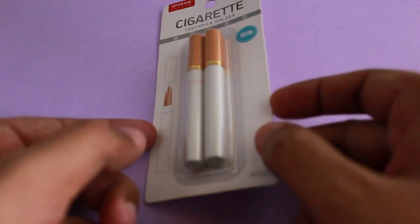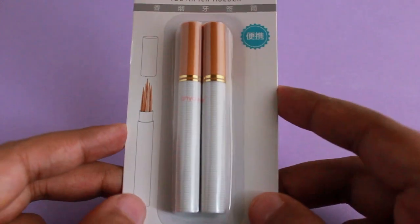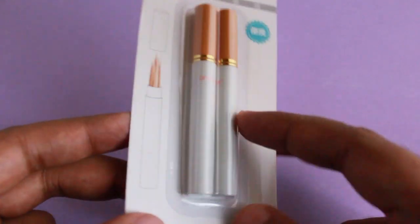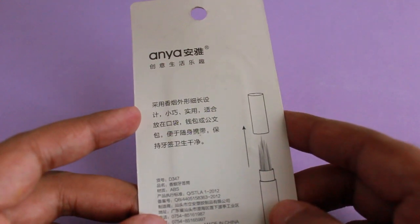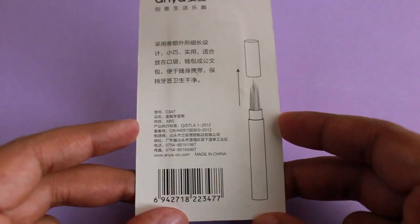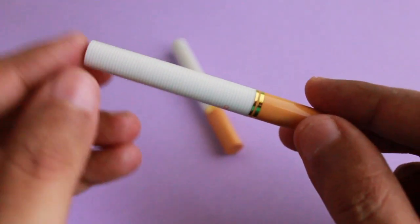Let's take a look at this Anya cigarette toothpick holder again, quite a unique product. Cost around 120 rupees or around two dollars. For that, you get these plastic shells that are made to look like cigarettes.